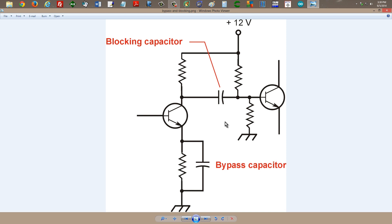The blocking capacitor is intended to block the flow of direct current while allowing the signal to pass.